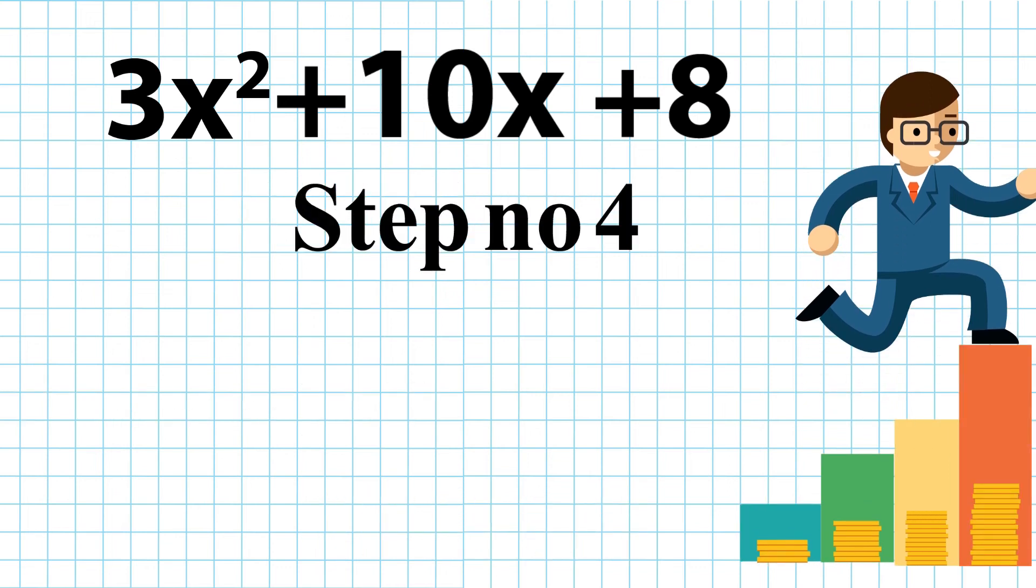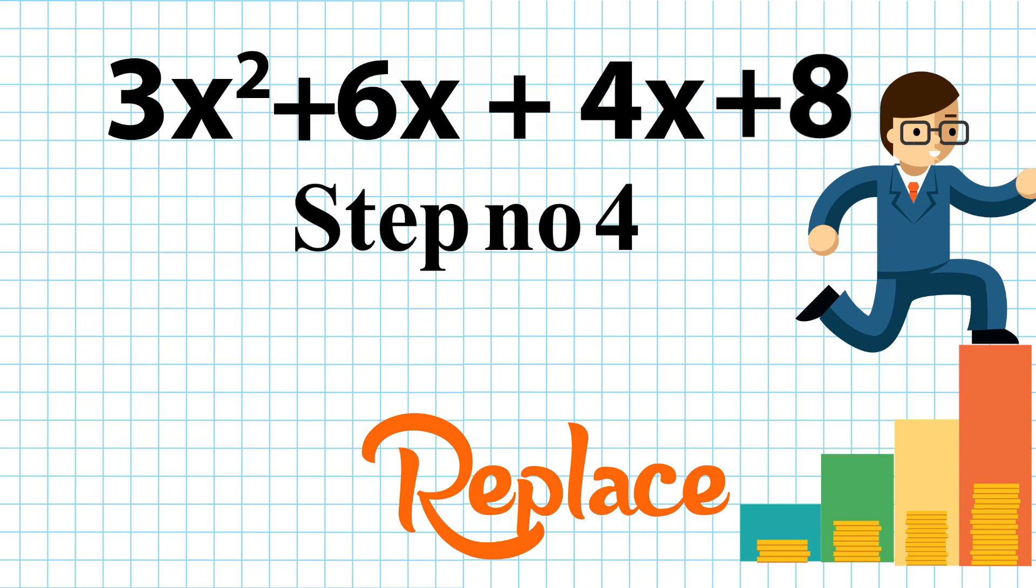Step number 4. Let's replace the middle term 10x by 6x plus 4x. 3x square plus 6x plus 4x plus 8 is the new expression. Start taking out the common factors.